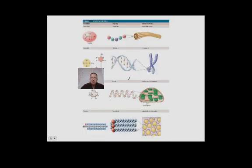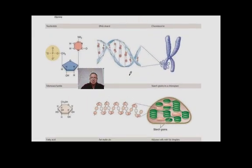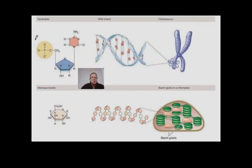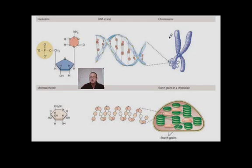To summarize: nucleic acids are built of monomers called nucleotides, which are joined into long polymers called polynucleotides by phosphodiester bonds. The polymer is either a DNA strand or an RNA strand, and its major biological function is to help build chromosomes. Those chromosomes contain the genetic information that determines your traits. That's it for nucleic acids — if you have any questions, please address those in class, and we'll see you in biology.